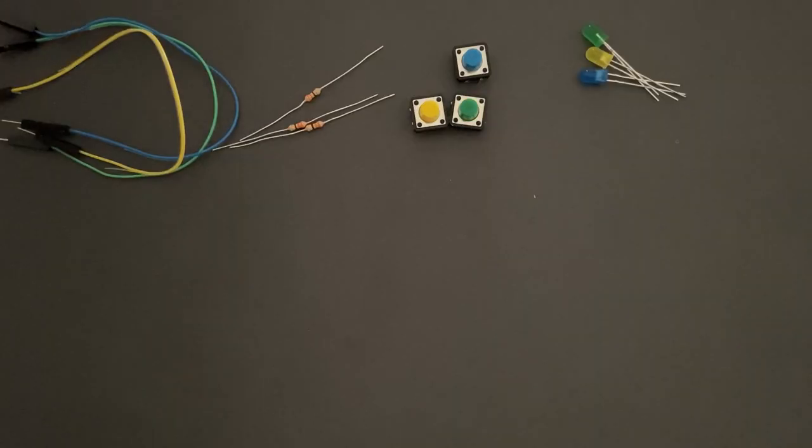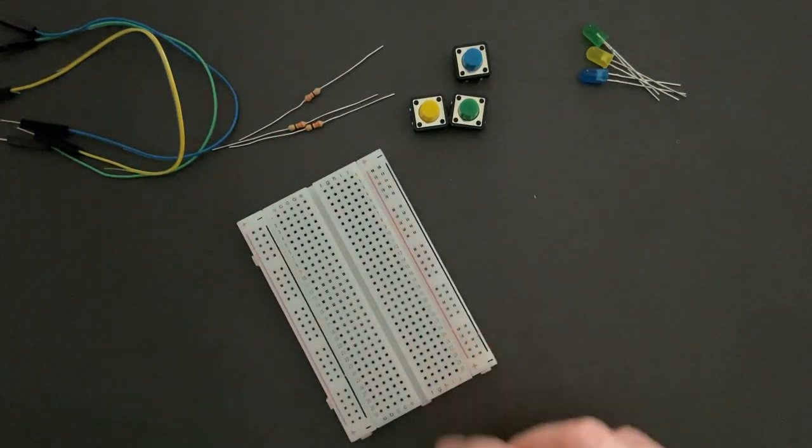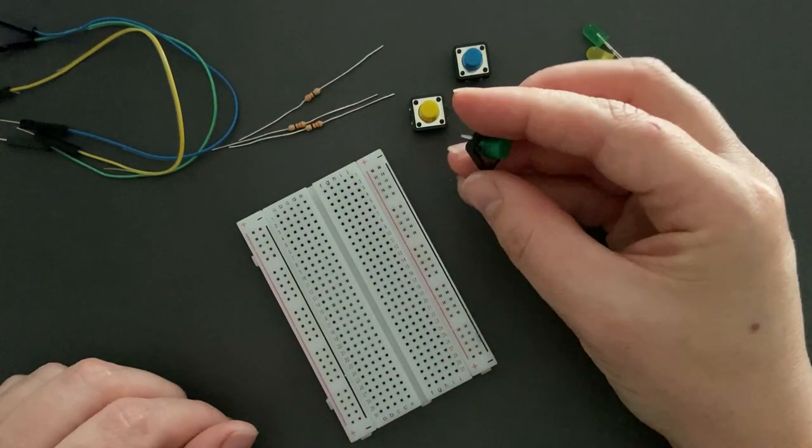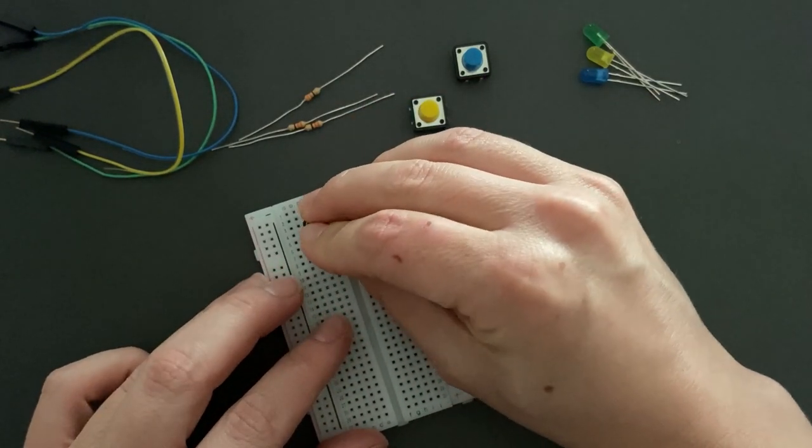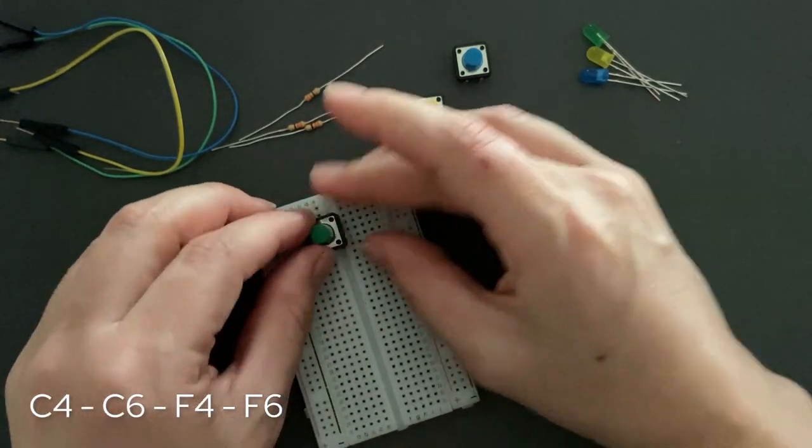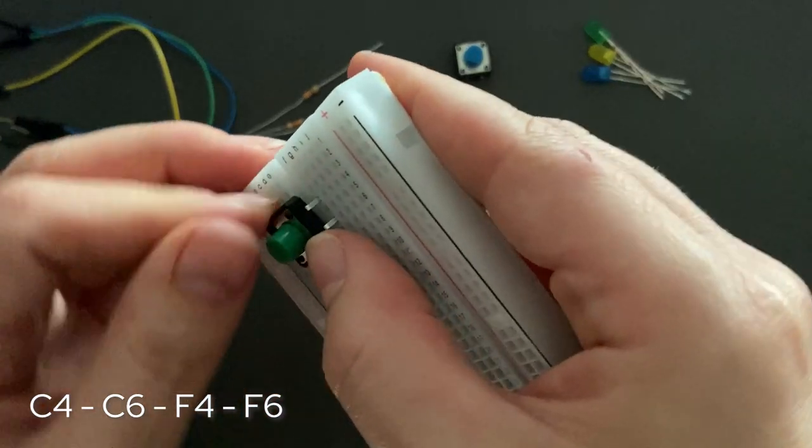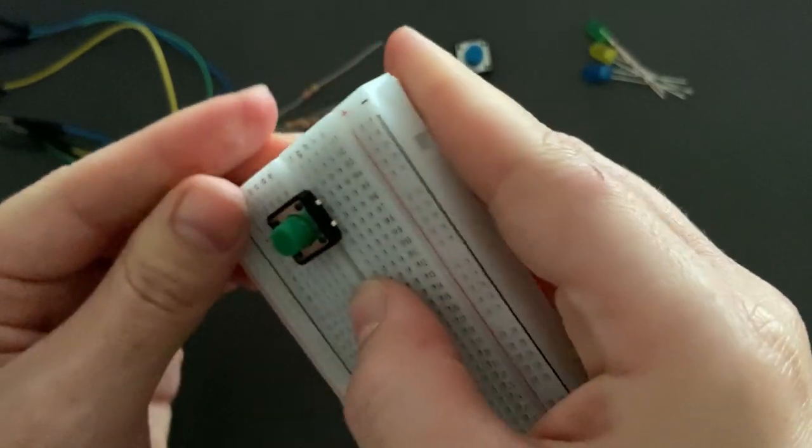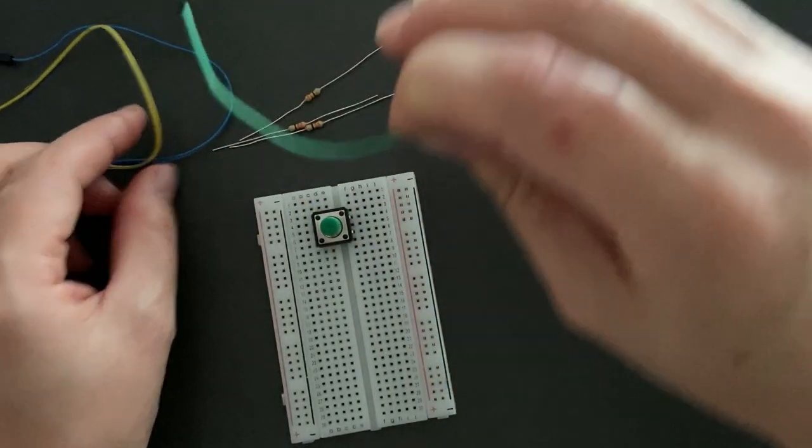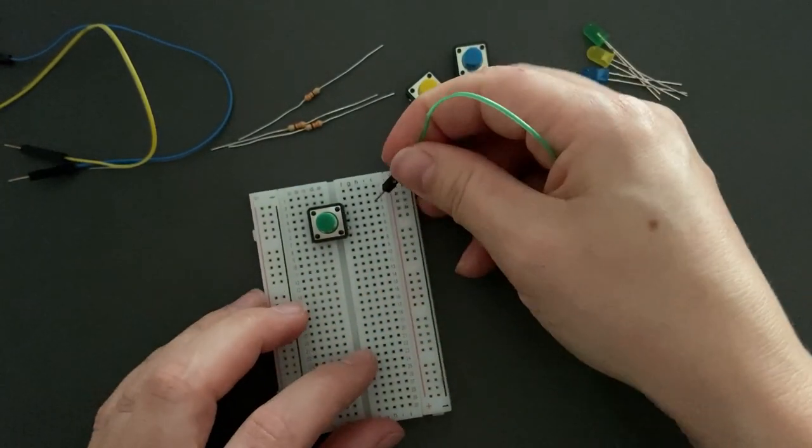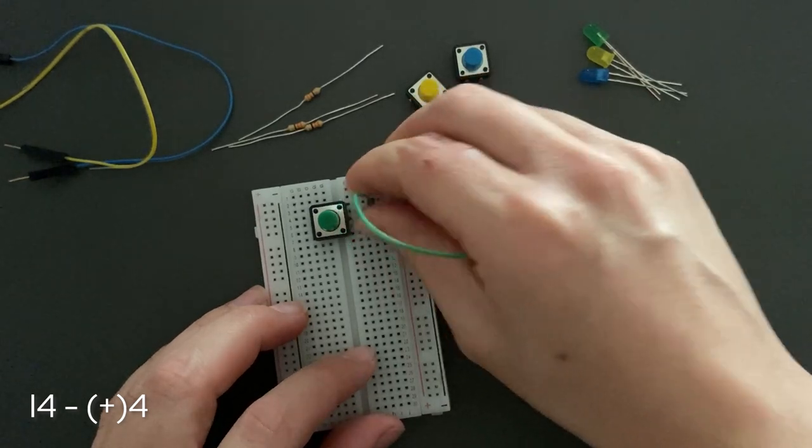Let's start our build. We'll do it step by step. Get the first push button, and place it so that the pins align with C4, C6, F4, and F6, and then gently press into place. Now connect a jumper wire from I4 to positive power rail 4.